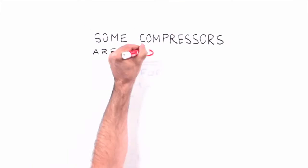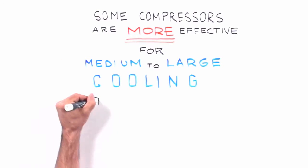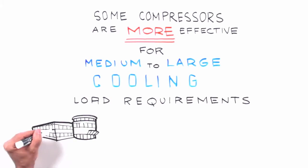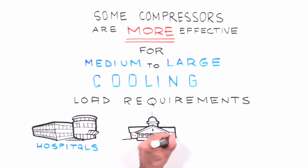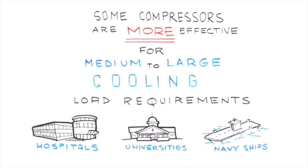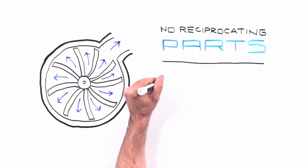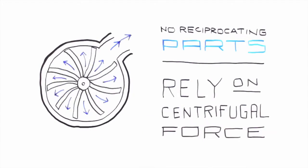Some compressors are more effective for medium to large cooling load requirements. Centrifugal compressors are ideal for complex buildings such as hospitals, universities, even Navy ships. Centrifugal compressors have no reciprocating parts and rely on centrifugal force to compress refrigerant vapor.